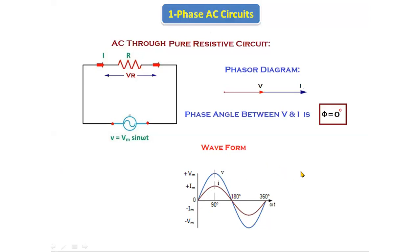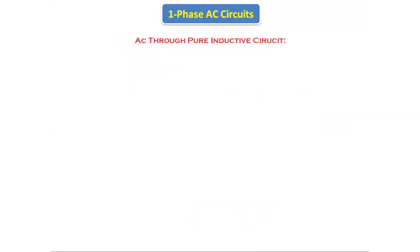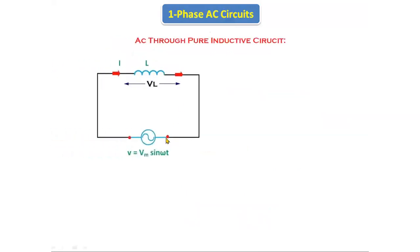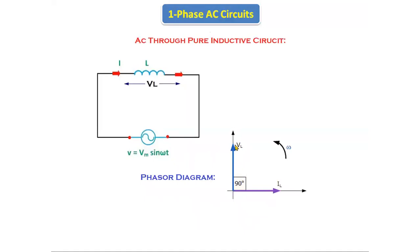Now let's see about the pure inductive circuit and pure capacitive circuit — how we will get the response if we give the AC supply to them. This is the simple circuit which is having only an inductor. We are giving the AC supply to the inductive circuit. This is the total current and this is the voltage across the inductor.